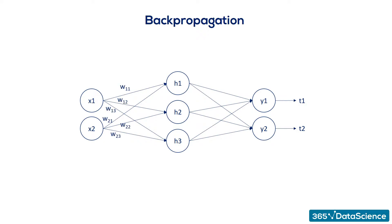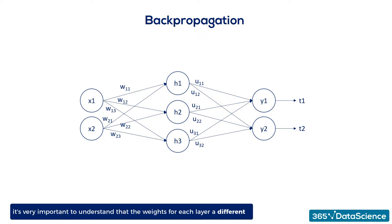The weights are W11, W12, W13, W21, W22, and W23 for the first part of the net. For the second part, we named them U11, U12, U21, U22, U31, and U32, so we can differentiate between the two types of weights. That's very important.